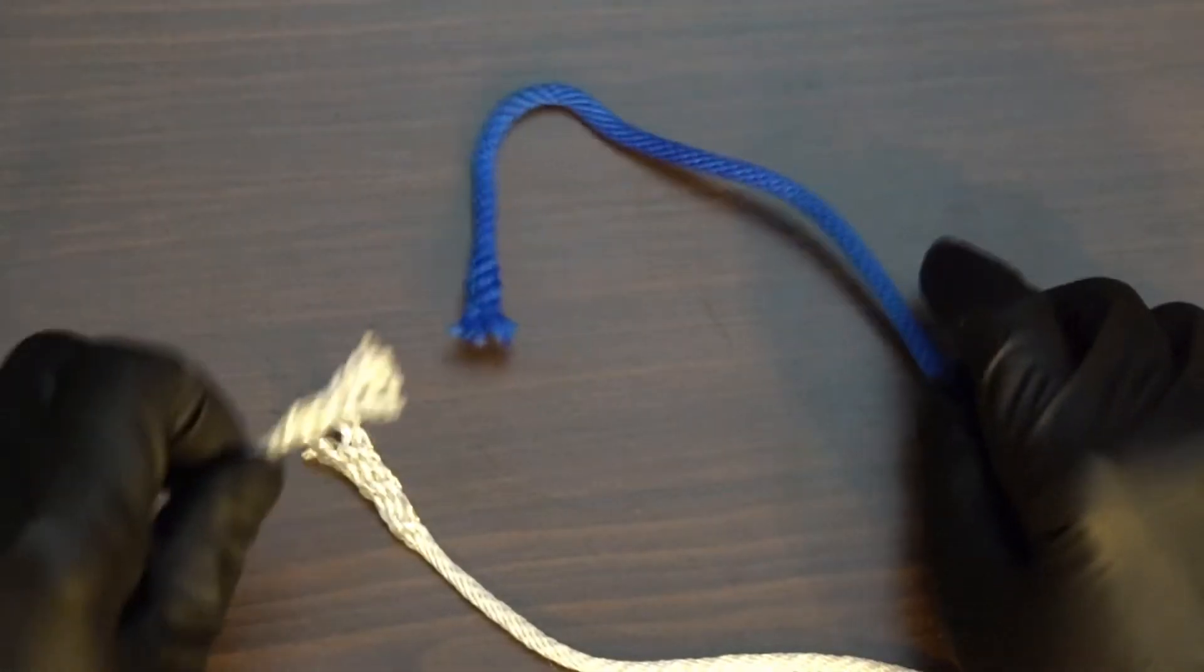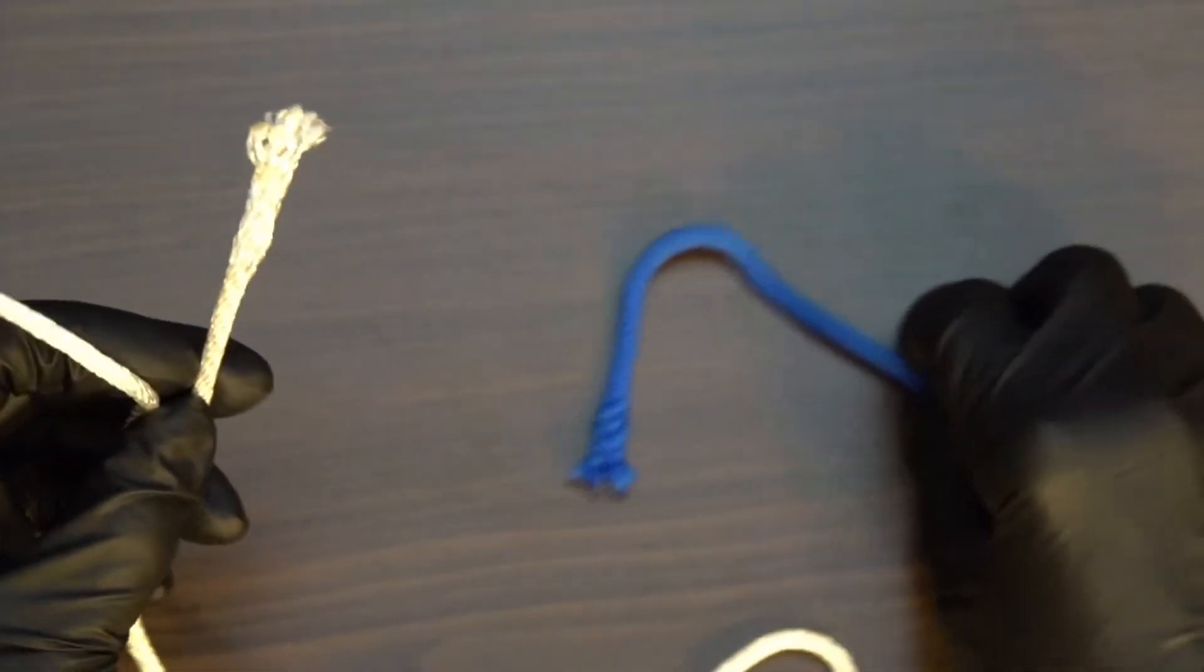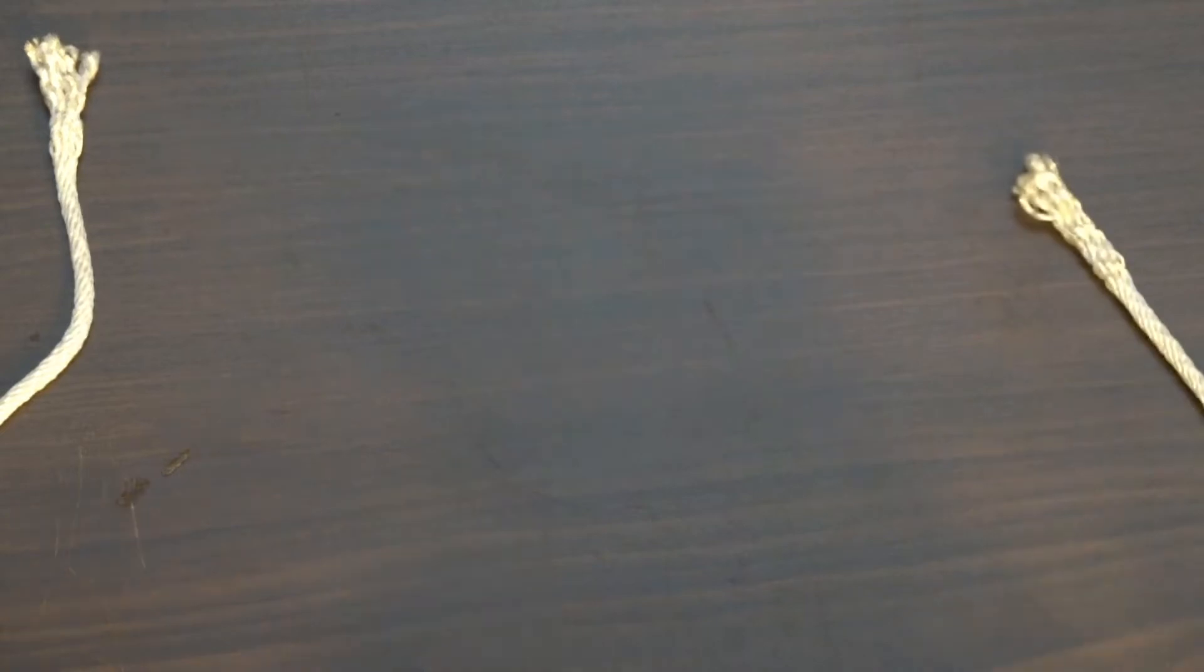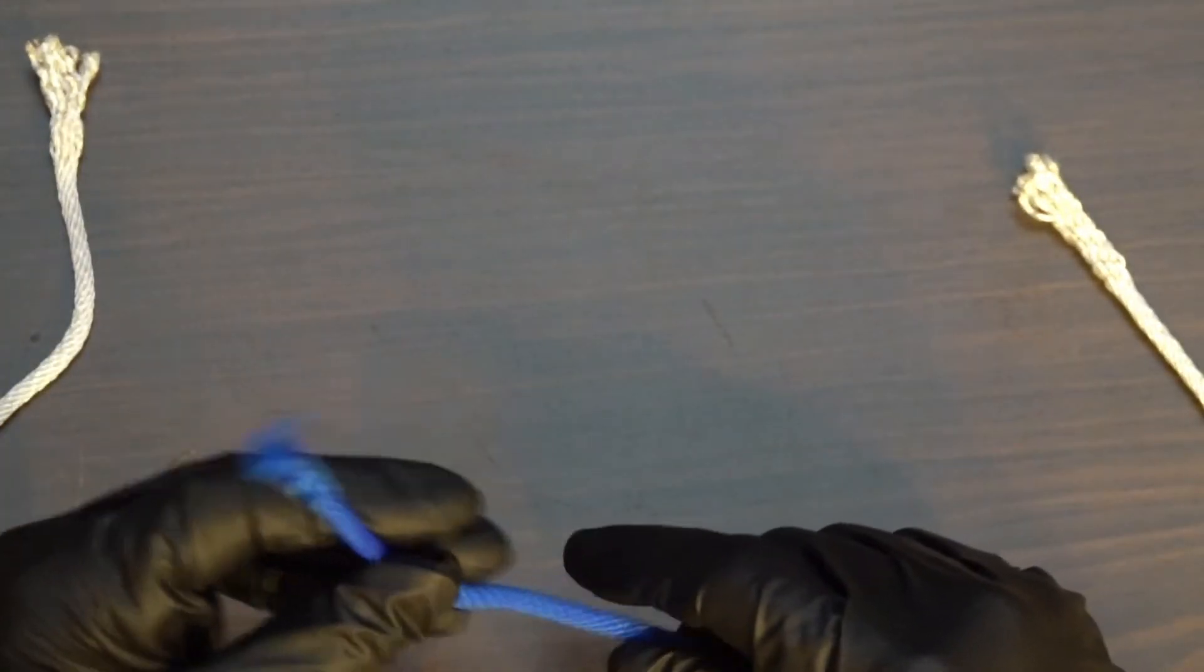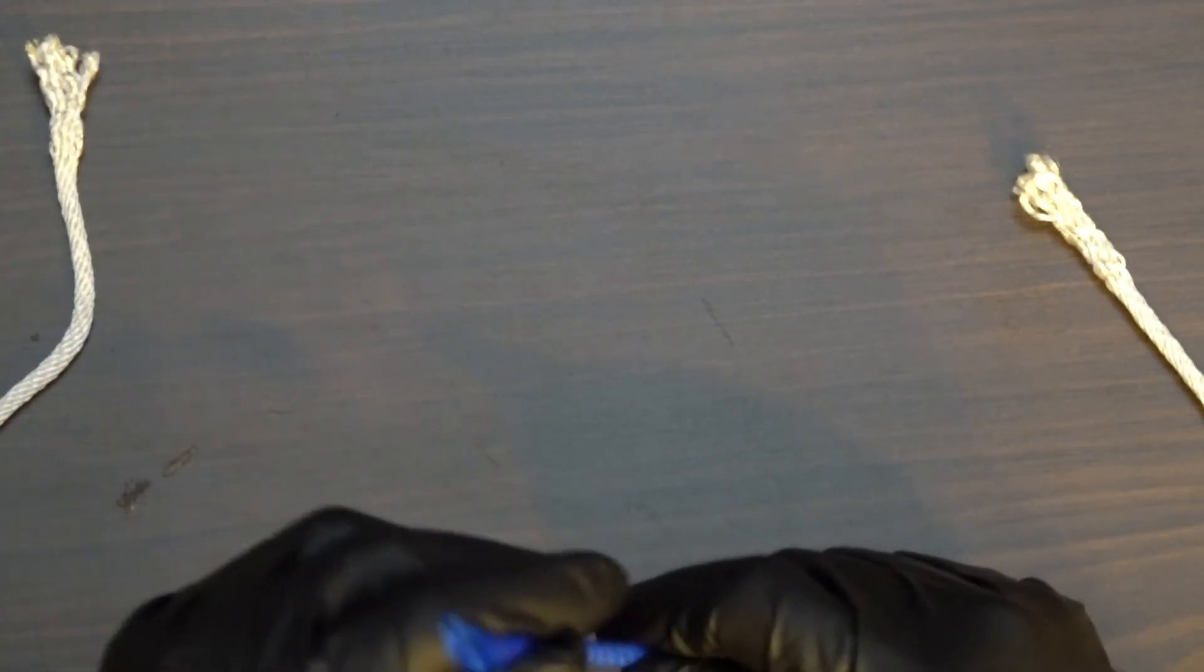We've got three pieces of solid braided nylon. These two white pieces are 3 sixteenths inch. This is quarter inch and nylon is great because it's UV resistant. One of the drawbacks is though it's got kind of a slippery surface so knots don't hold real well.